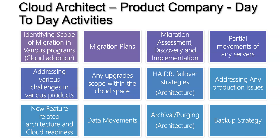New feature-related architecture and cloud readiness: for example, if the product is adding a new feature or new microservice, you need to be ready for that feature release and prepare the architecture. If it is PaaS-based, you need to specify what resources are needed — for example, adding Azure Functions, Azure App Services, or VMs, and what security enhancements are required — all of that needs to be covered when new features come to the product.